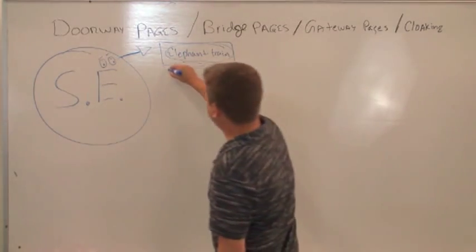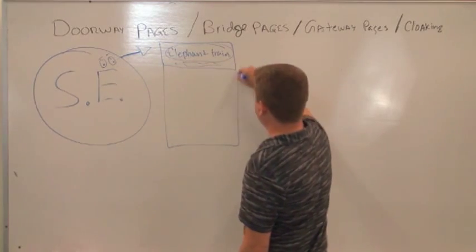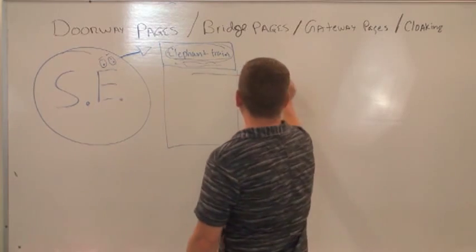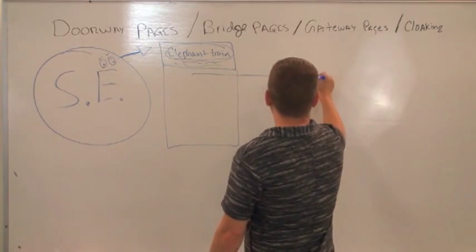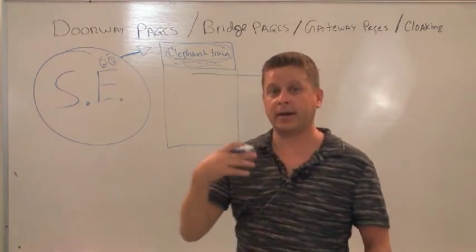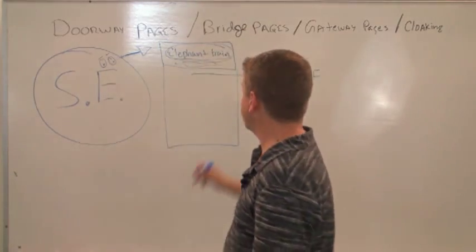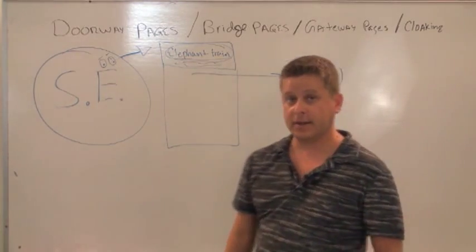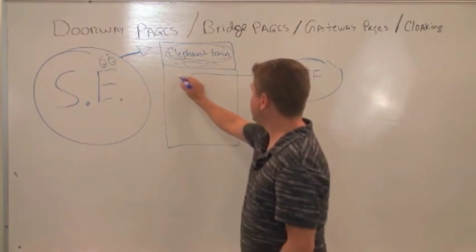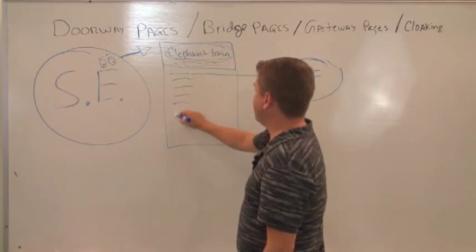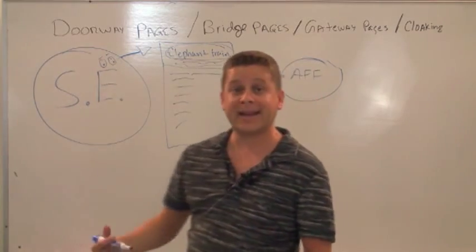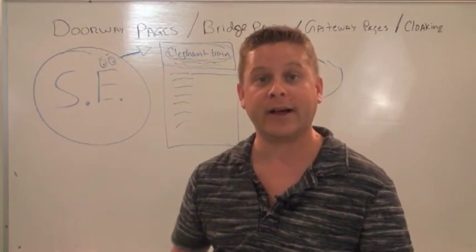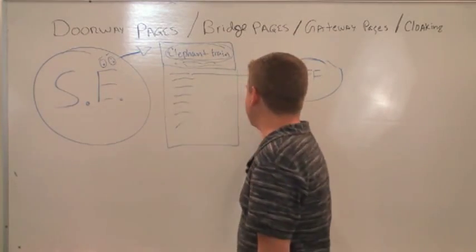One way to do this would be to have this page where everywhere it said 'elephant training,' we would have a link to the affiliate offer or the page we wanted the visitor to see. So we're showing something to Google, but we want the visitor to go to the affiliate page. That would be like a gateway page — basically, 'Welcome to my page, please click the link because there's no valid information here for you, so you have to go somewhere else.'